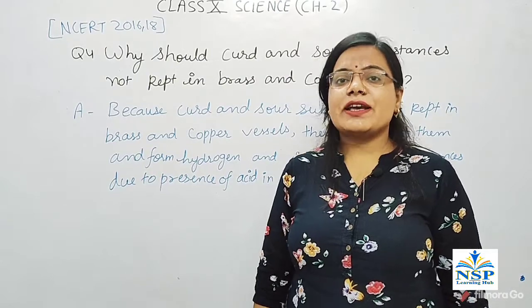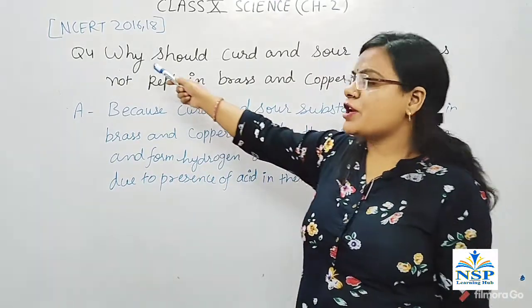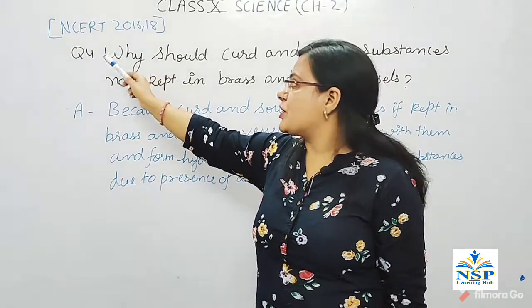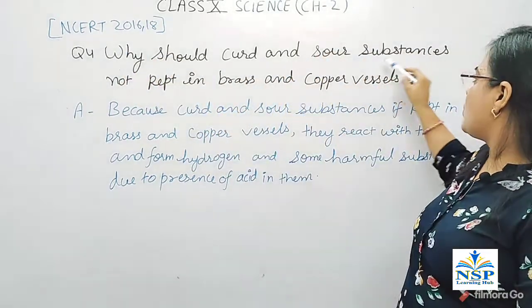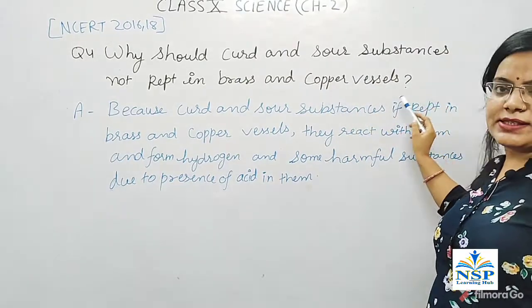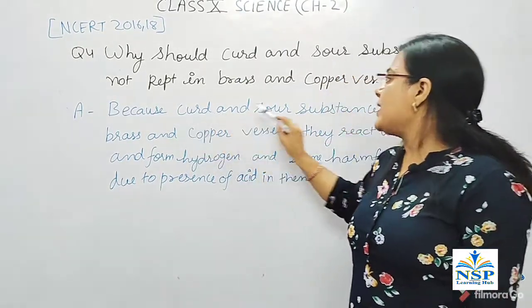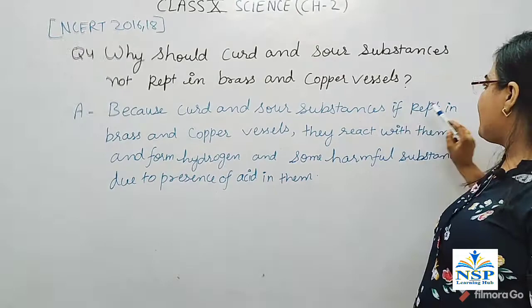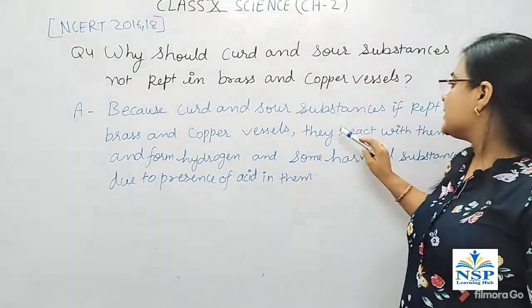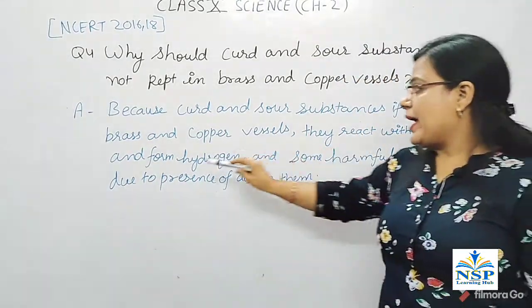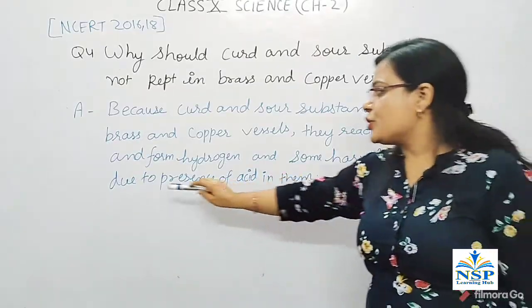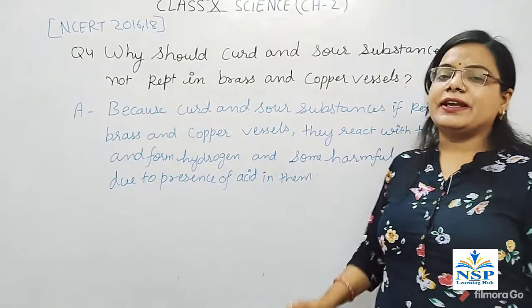Our next important question, question number 4, is also an NCERT question: Why should curd and sour substances not be kept in brass and copper vessels? Because curd and sour substances, if kept in brass and copper vessels, react with them and form hydrogen and some harmful substances due to the presence of acid in them.